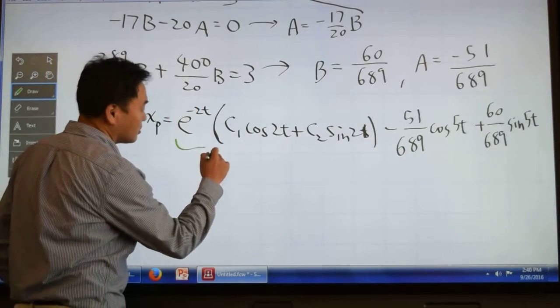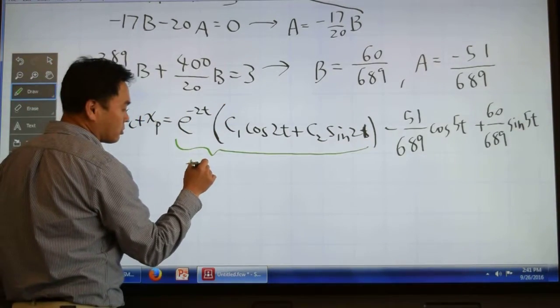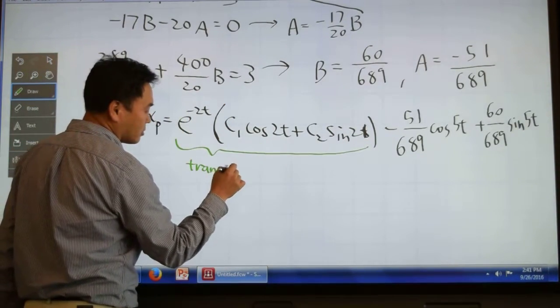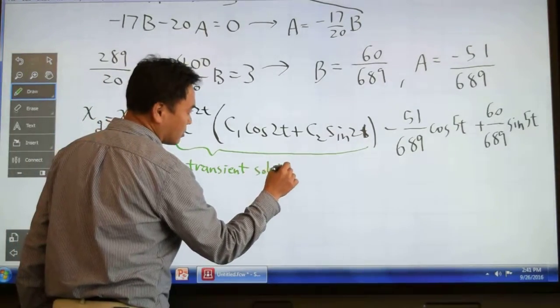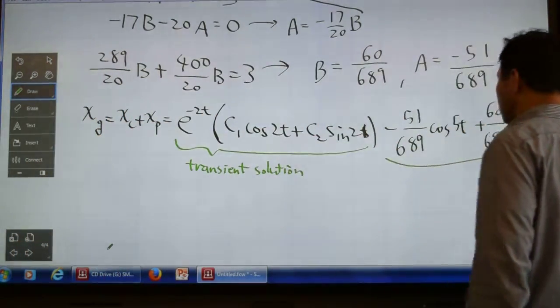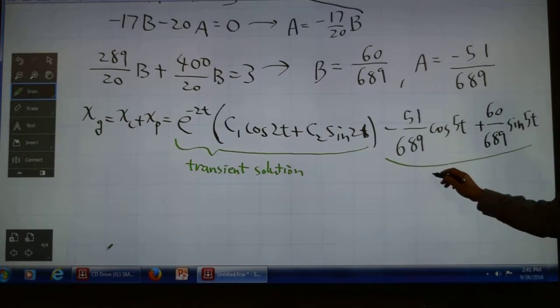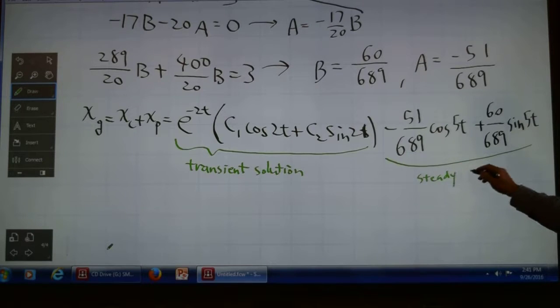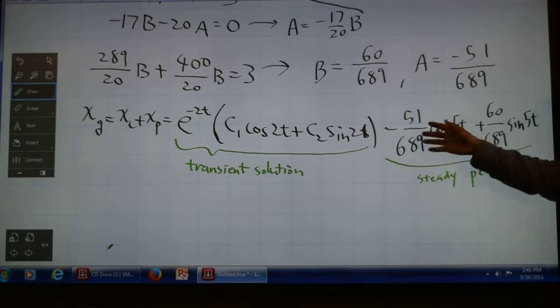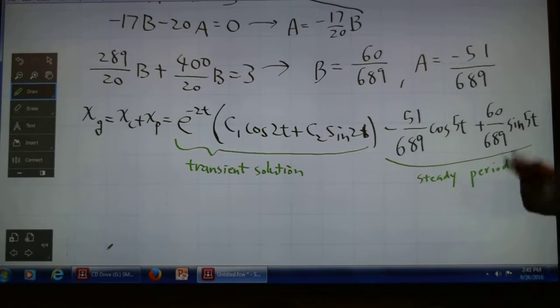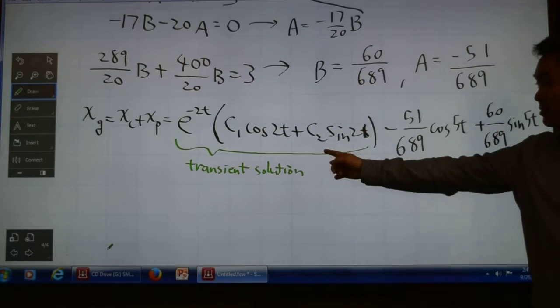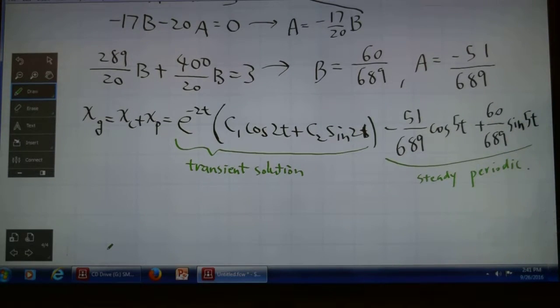Therefore, the complementary part is called the transient solution, and the particular part is called the steady periodic solution. It doesn't die off because you have this external force constantly moving the system. To answer the second part of the question, this is the steady periodic solution.